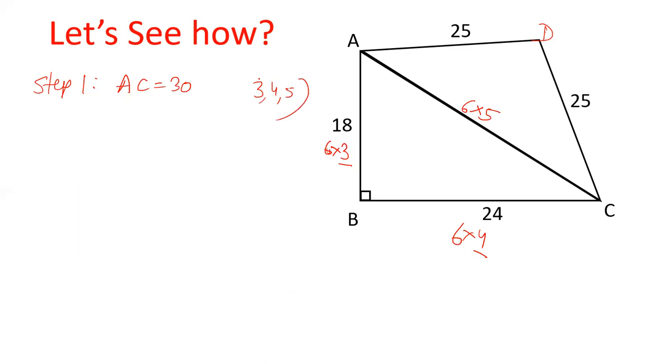We have 3, 4, and 5 triplet. And 6 times this. So if this side is 30, now we have another value.